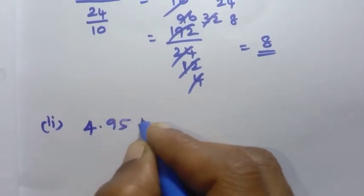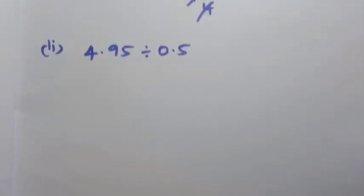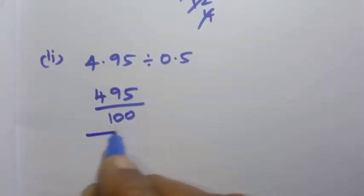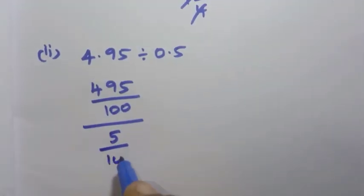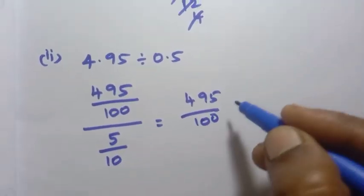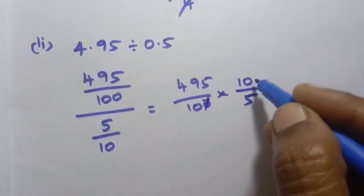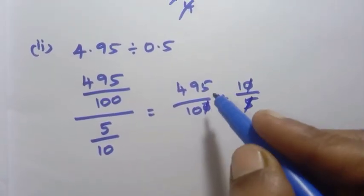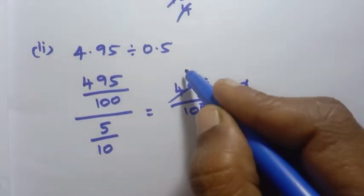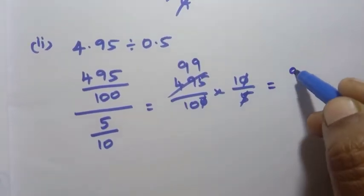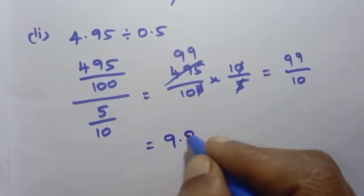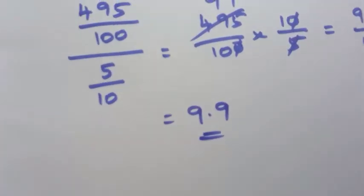Second problem: 4.95 divided by 0.5. 4.95 has 2 decimal places. After converting and simplifying — dividing 4.95 by 0.5 by converting to fractions and cancelling, the answer is 9.9.